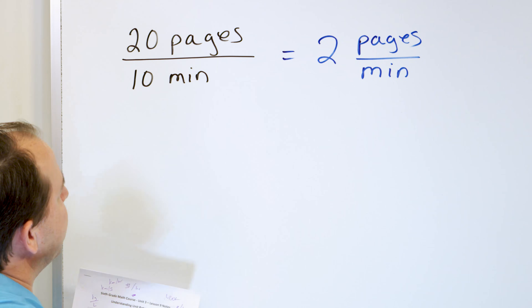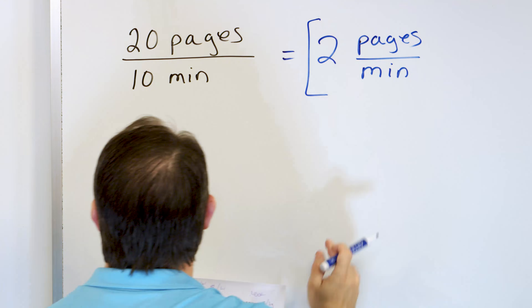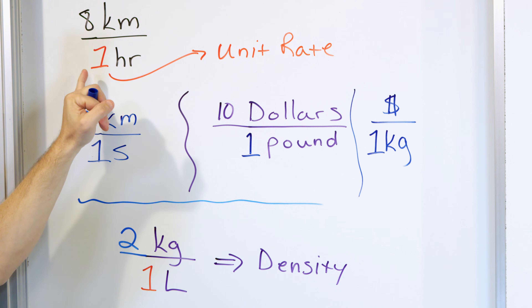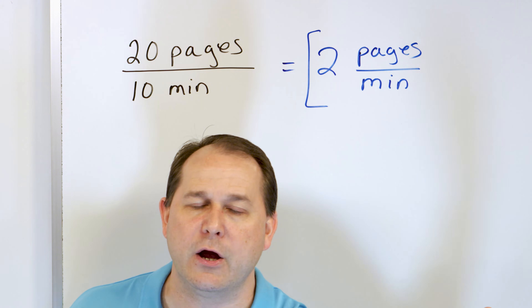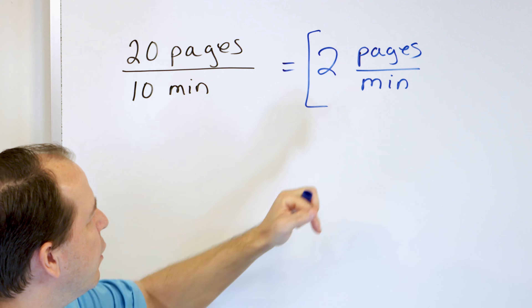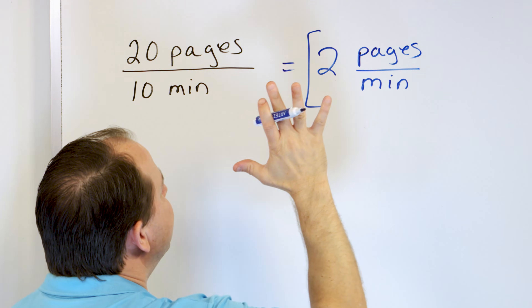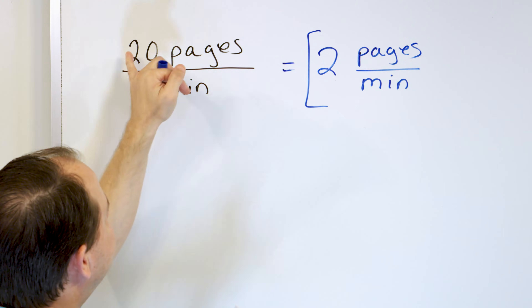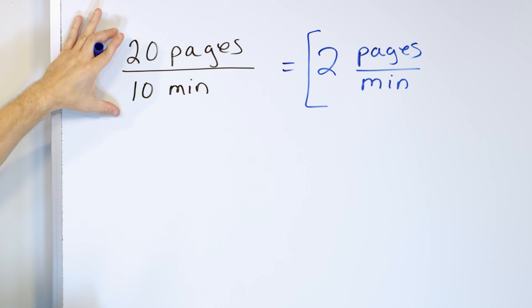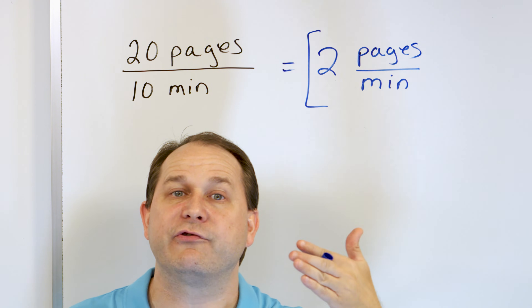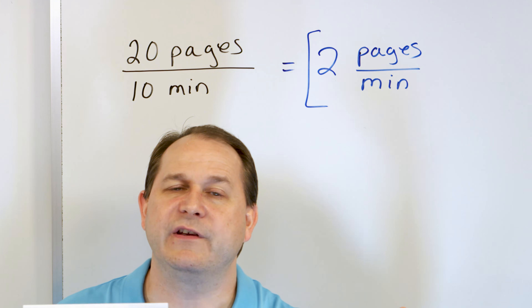The units don't cancel or disappear. It's still pages per minute — a unit rate. Two pages per minute means two pages for every one minute. You don't have to write the one. So after the first minute she reads two pages, after the second minute two more, after the third minute two more. After 10 minutes, two times 10 is 20 — she reads 20 pages, which is what we started with. We divide to find the unit rate — that's the point.